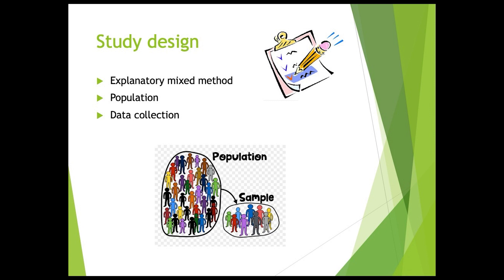An explanatory mixed method will be used in this study. The population will consist of tourists that visit the Kruger National Park and participated in previous censuses. Participants will be sampled using a non-probability approach, meaning there is no predetermined number of participants. An online survey designed on SurveyMonkey will be distributed on various social media sites for Kruger National Park and EWT, and participants identified from the survey will be approached for interviews.